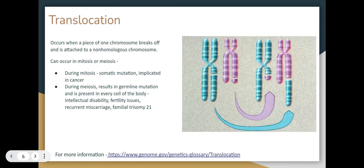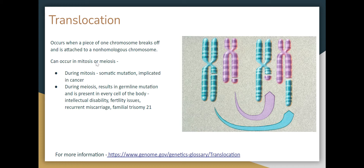Now let's talk about translocations. A translocation is an event that occurs when a piece of a chromosome — see this greenish guy here — is broken, and that material goes onto a non-homologous chromosome and gets stuck there. This can occur in mitosis or meiosis. During mitosis, only some of the somatic cells are involved, and it may have no clinical significance, or it may be implicated in diseases like cancer.